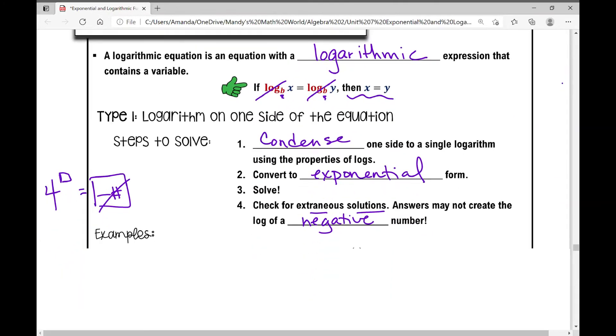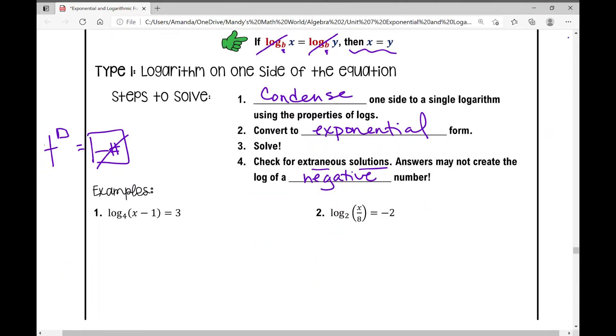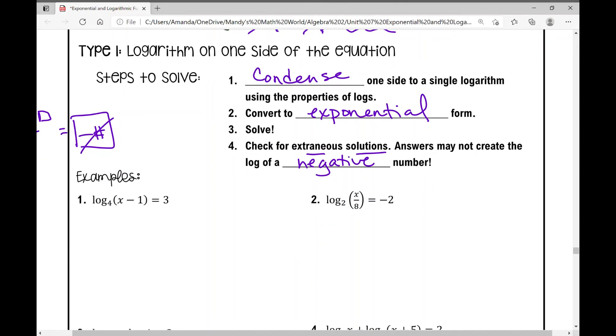So let's move on to our examples. In our example, the very first example, if I follow my steps, I don't need to condense anything to a single logarithm. I only have one log. So I'm going to rewrite this in exponential form. I kind of do that counterclockwise motion. Four to the power of three equals x minus one. So I'm going to write it like that. Four to the power of three equals x minus one.